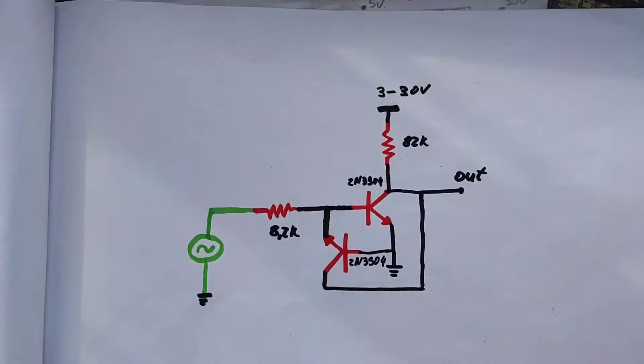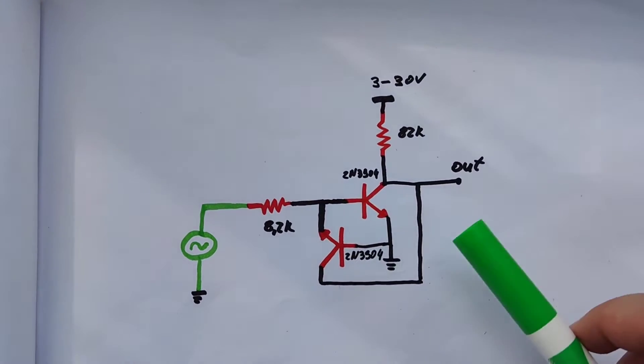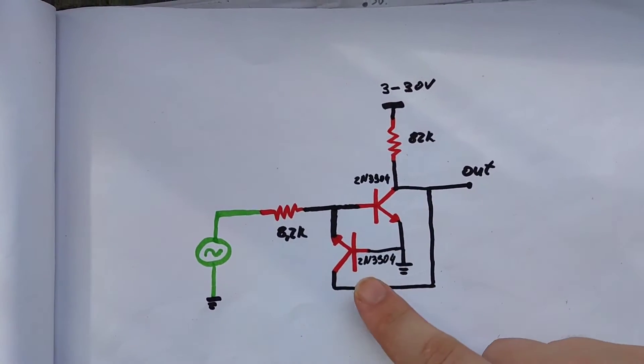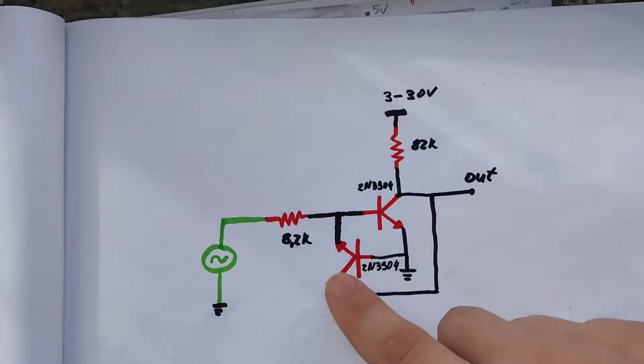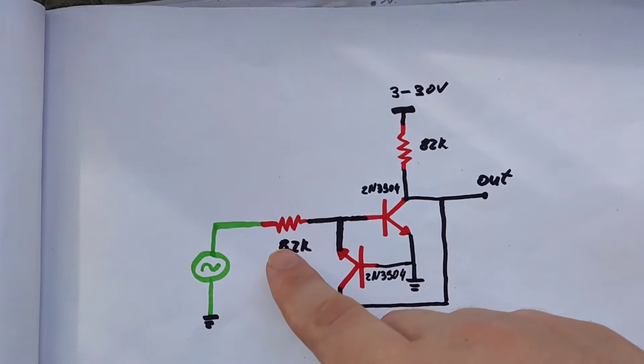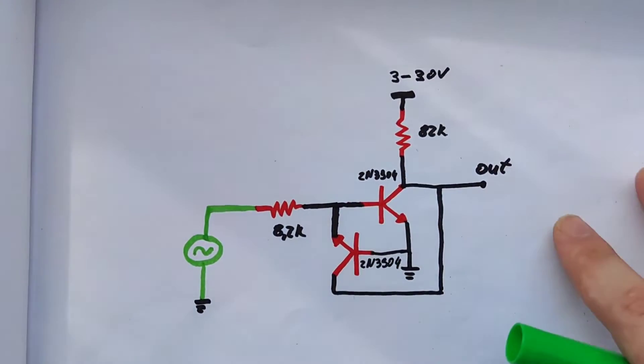Let's see it in paper first. As you can see, we have two ordinary transistors, the 2N3904, and two resistors, one 8.2 kOhm and the other 82 kOhm.